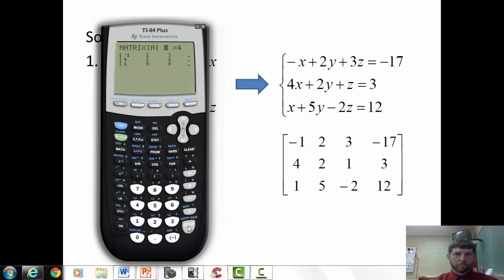I have no idea where my matrix went. Why did it kick me out? Let's try this again. 3 by 4. Negative 1, 2, 3, negative 17. 4, 2, 1, 3. 1, enter. 5, enter. Negative 12, enter. Sorry, negative 2, enter. 12, enter. The on-screen calculator's not wanting to cooperate.